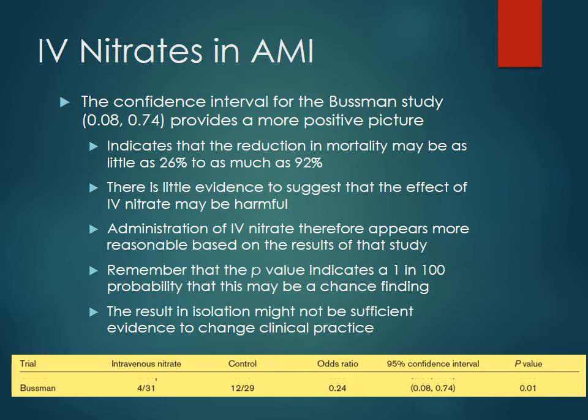Comparing this to the Busman study where the confidence interval ranges from 0.08 to 0.74 — indicating a reduction in mortality maybe as little as 26% all the way up to 92% reduction — those are much better results. There's no real suggestion here that giving IV nitrates would actually be harmful to patients. Because this does not encompass one, it achieves statistical significance, and only one in a hundred trials would have a probability of finding this just by chance alone. Results like this from only 60 patients would not be enough to necessarily change clinical practice, but taken as a whole compared with multiple trials showing similar results, then you start to make some progress toward making changes in actual practice.